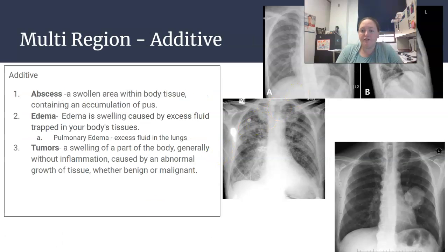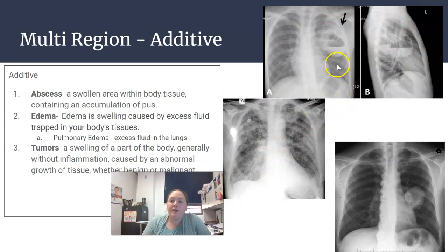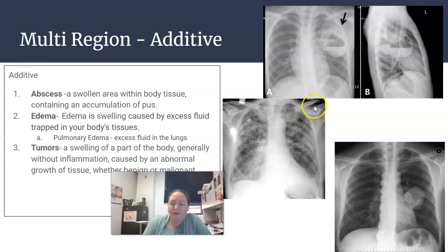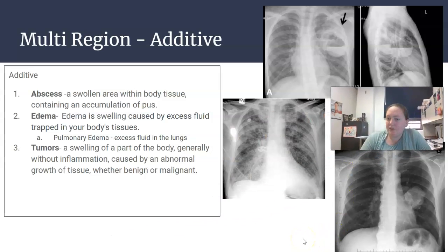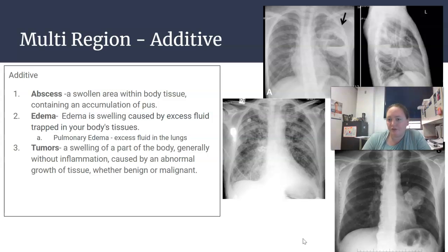For additive pathologies, we could have an abscess with filling of pus, or pulmonary edema where there's fluid within the lungs — see how they're all patchy and white. This is a tumor showing abnormal growth within the lung. These can happen anywhere, but going back to medical terminology, ask: is it increasing or decreasing? That's how additive and destructive pathologies work.